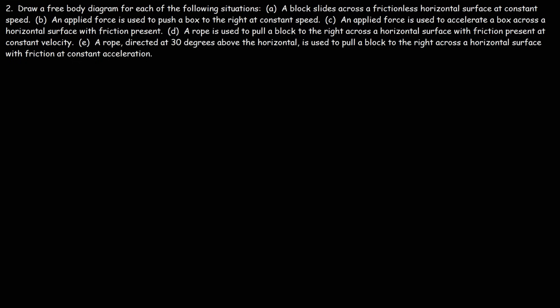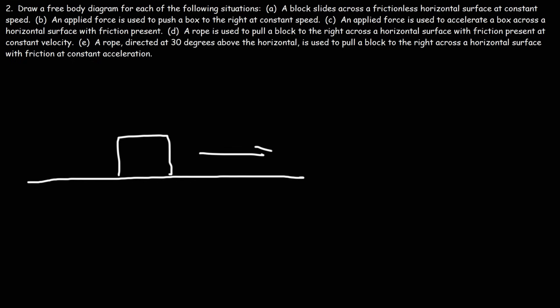Now let's work on some more examples. For part A, we have a block that slides across a frictionless horizontal surface at constant speed. We have a horizontal surface with a block on it moving to the right. Anytime you have an object resting on a surface, there's going to be an upward normal force, and that upward normal force is going to be equal to the weight force — so the lengths of those two arrows should be the same.